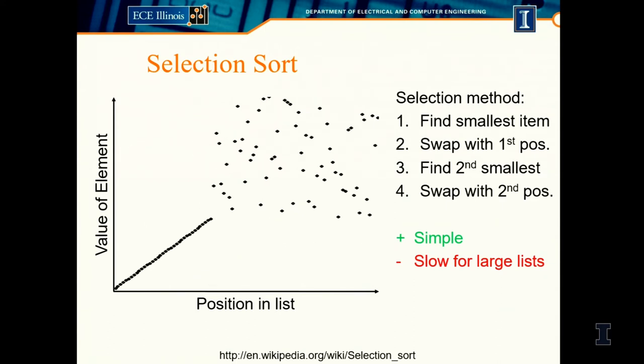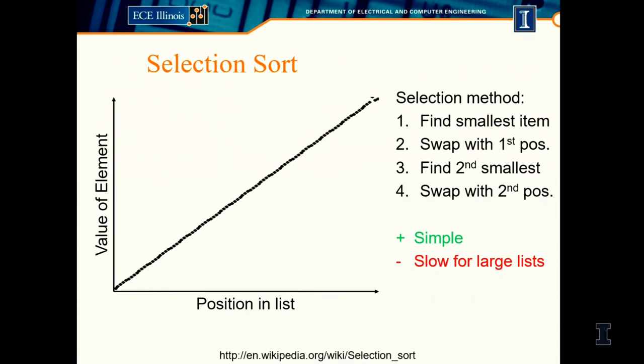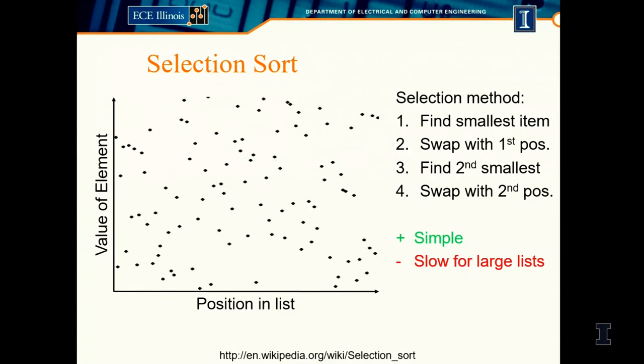In the animation, over time we just keep putting the next smallest element in the list, building up larger and larger elements. This is selection sort.